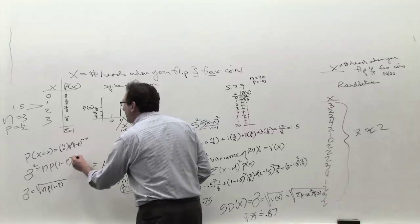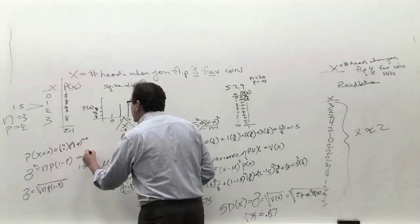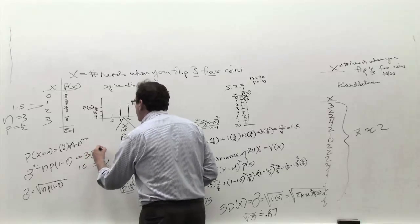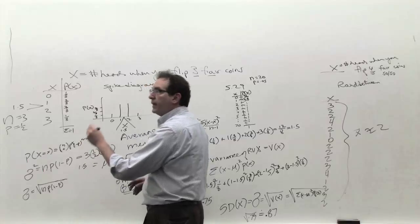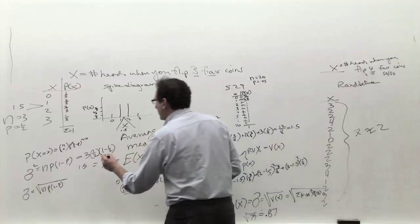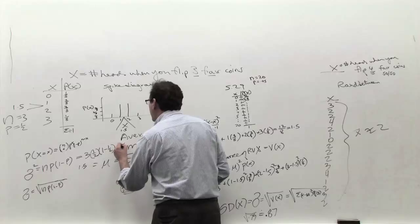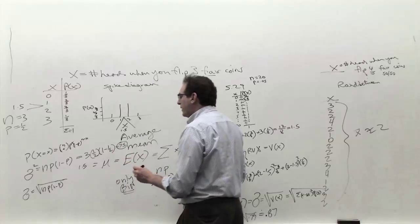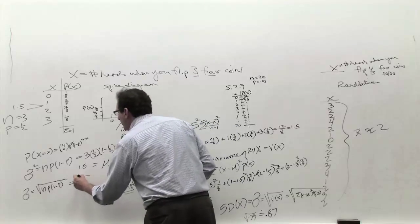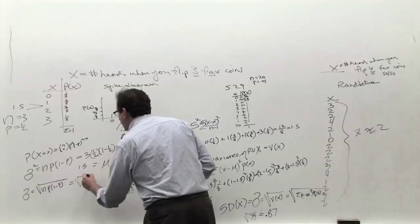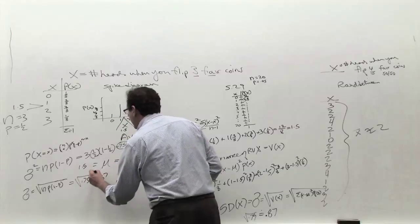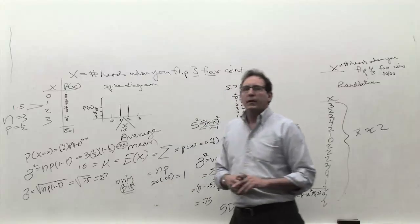And finally, in terms of an example, the n is 3, the p is a half, the 1 minus a half is also a half. The variance is 3 times a half times a half, which is 3 quarters, which is 0.75, which is why I claim the answer is 0.75. And the answer to the standard deviation is the square root of 0.75.